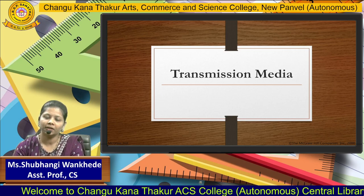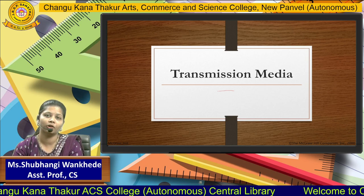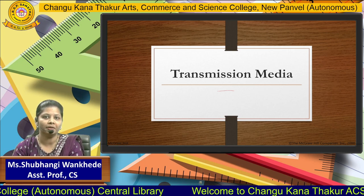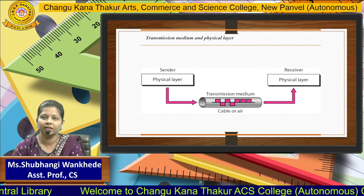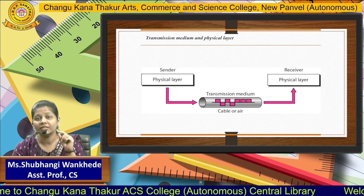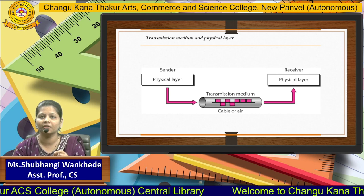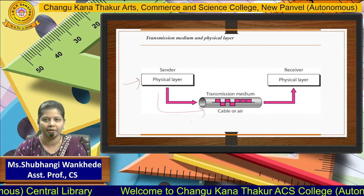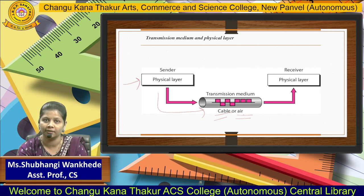Today's topic under computer networks is transmission media. A medium is one of the basic components in communication, so it is very important what medium we are using for transferring data from sender to receiver. The physical layer in OSI and TCP/IP protocol suites is the last layer connected to the actual medium. All bits are converted in the physical layer, which then transmits them through the transmission medium — either wired (cable) or wireless (through the air).